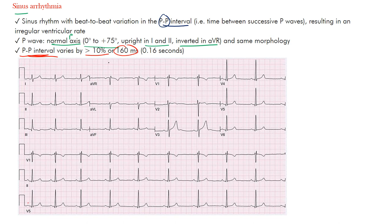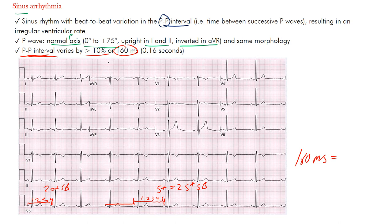Looking at a P wave here and the one that follows, count the interval. Then compare it to another P-to-P interval. Counting the small boxes between them, you can clearly see at least five — so 25-plus small boxes in one interval — and then about four in another, so around 20-plus small boxes. That's clearly more than 160 milliseconds.